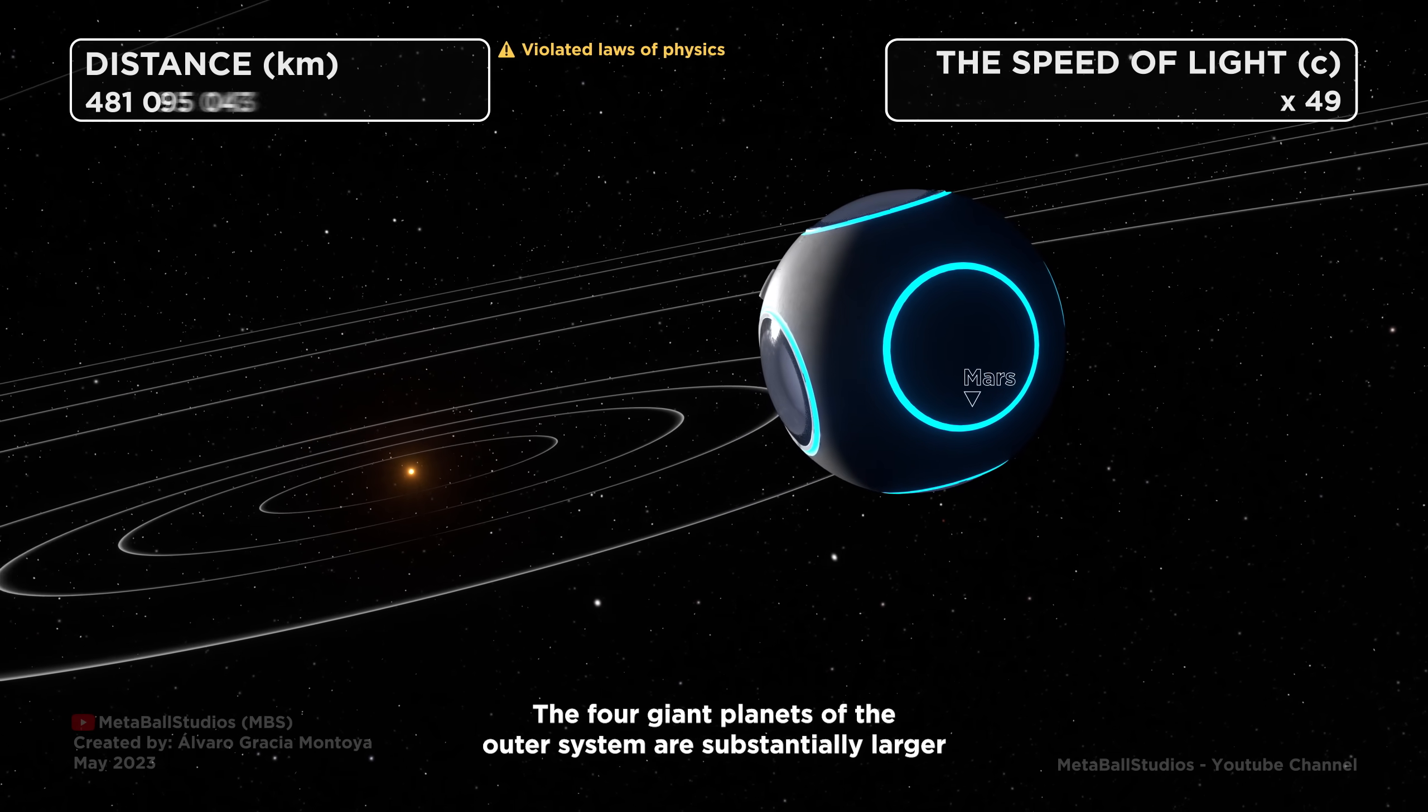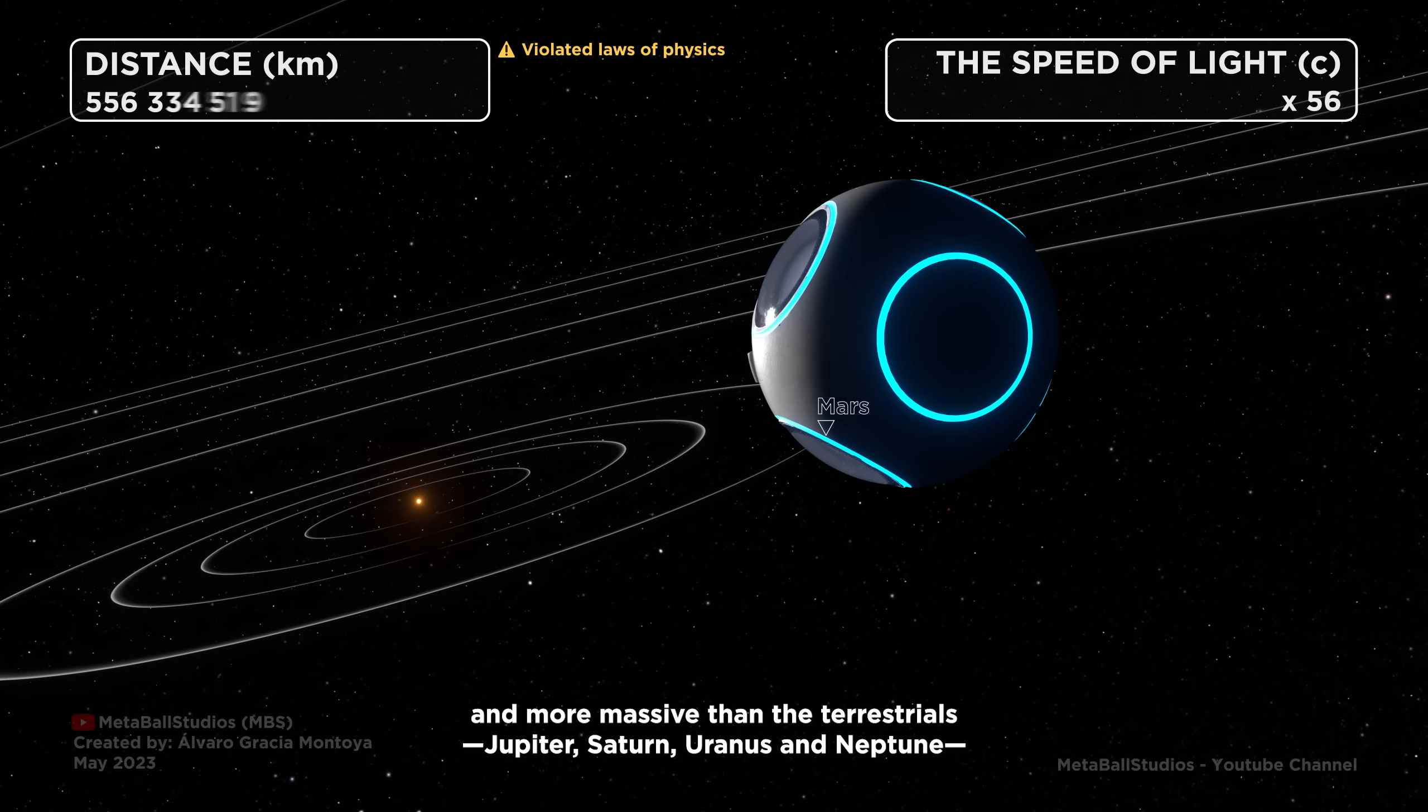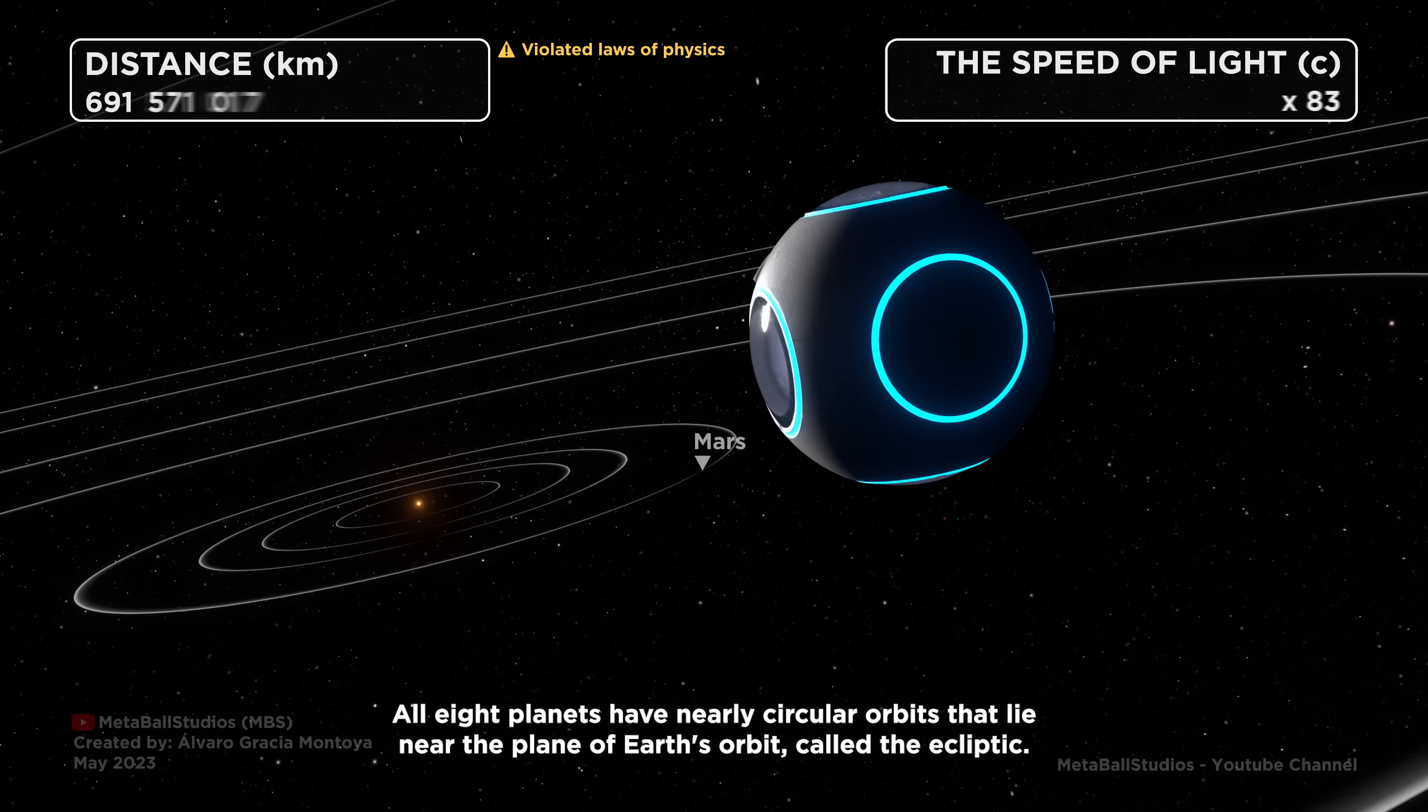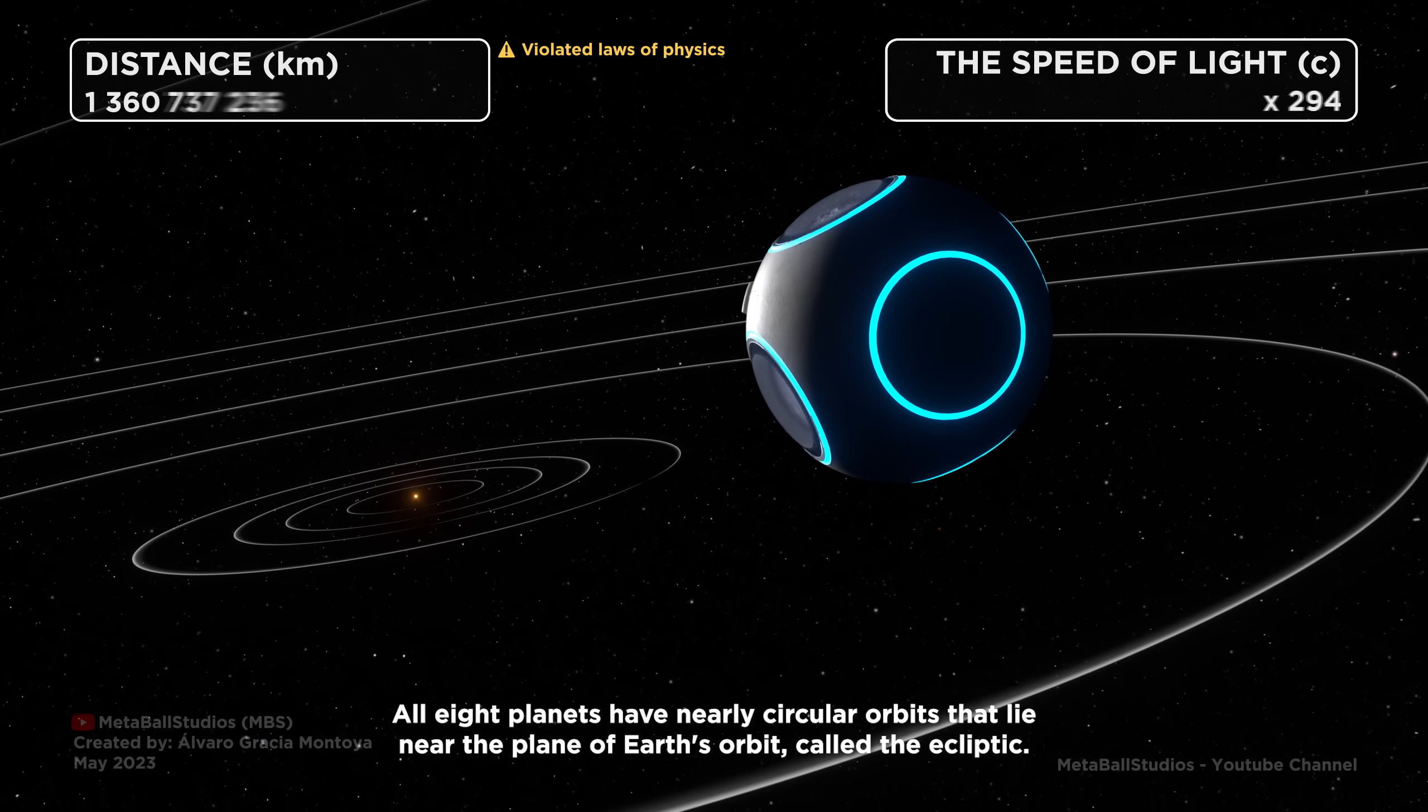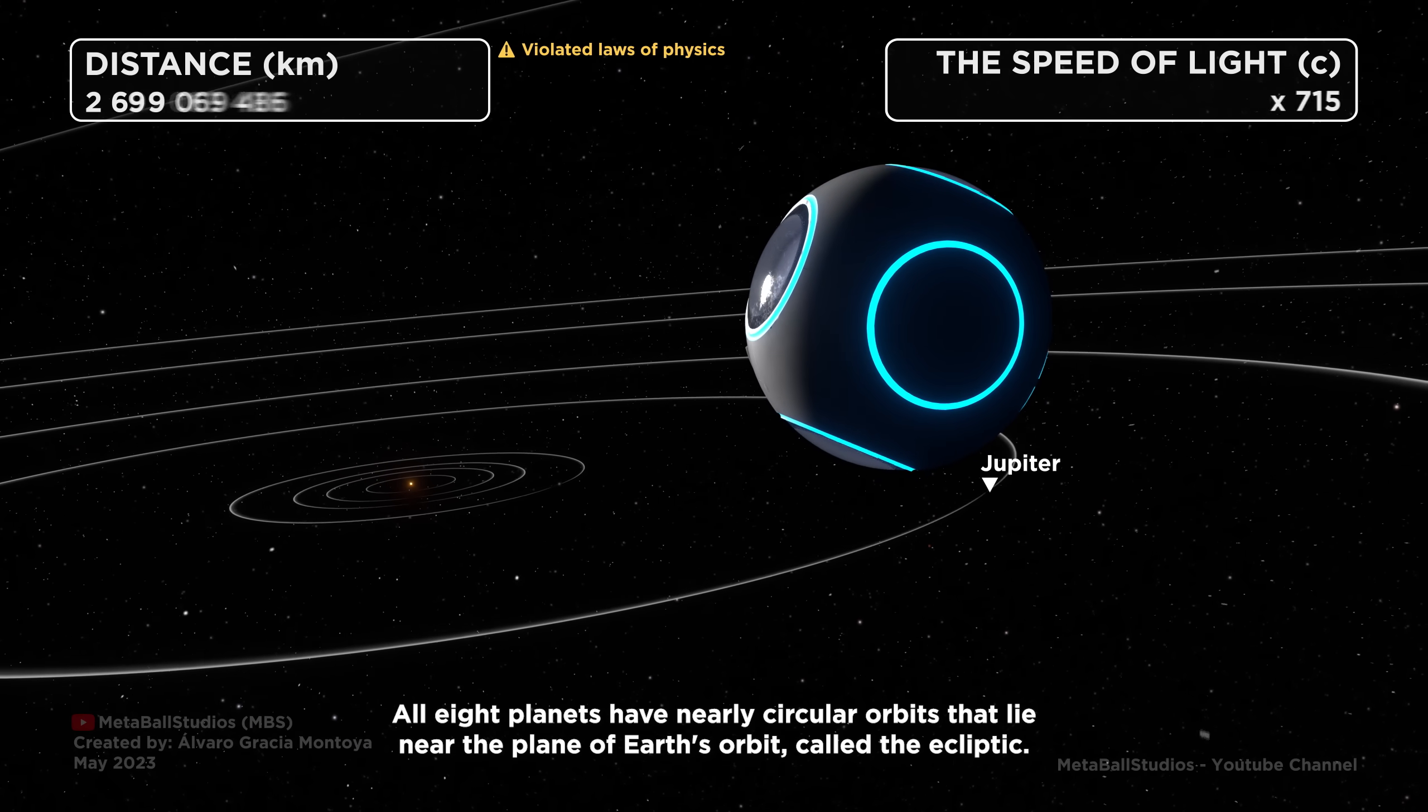The four giant planets of the outer system are substantially larger and more massive than the terrestrials: Jupiter, Saturn, Uranus and Neptune. All eight planets have nearly circular orbits that lie near the plane of Earth's orbit, called the ecliptic.